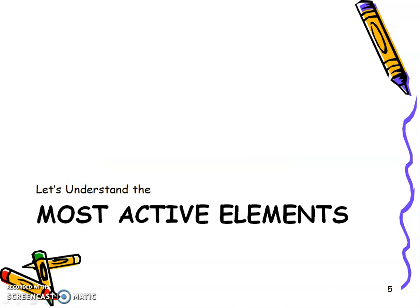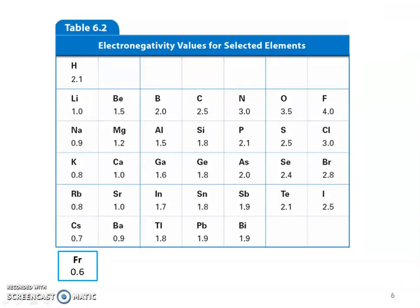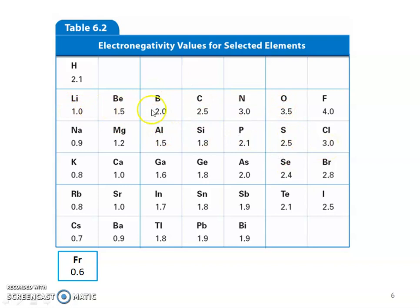Here are the electronegativity values for a nice representation of the elements. Notice the thicker line separating groups one and two: alkali metals (group 1, one word) and alkaline earth metals (group 2, two words). Then you have your metalloids along the stair-step line, and your non-metals — groups 13 through 17, your halogens. This also represents valence electrons: group 13 has 3, 14 has 4, 15 has 5, 16 has 6, and 17 has 7.